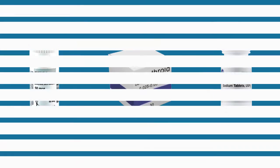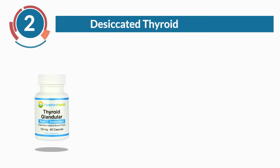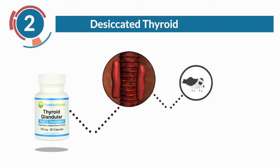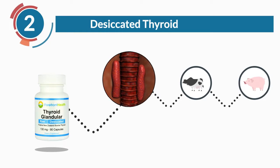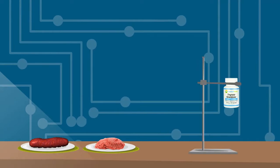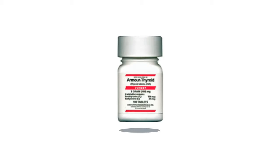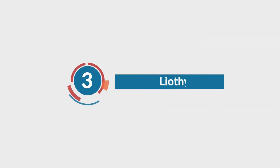Two, desiccated thyroid is taken from the thyroid glands of animals, usually beef or porcine. The thyroid glands are dried up and ground for therapeutic use. Armour Thyroid is a type of desiccated thyroid. Three, liothyronine is a replacement medication for the T3 hormone.